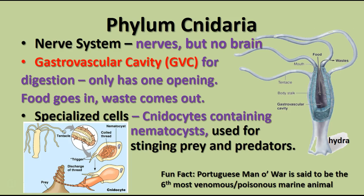Cnidarians have very specialized cells called cnidocytes, which contain nematocysts — little stinging barbs that can be released when something comes into contact with their tentacles. The tentacles are lined with many nematocysts that shoot out like a poison dart, sticking into prey and pumping toxins into it. This is why it stings when you touch a jellyfish, and sometimes corals or sea anemones can sting you the same way. The Portuguese man-o-war, a type of cnidarian, is said to be the sixth most venomous marine animal, so be careful at the beach and don't step on them.